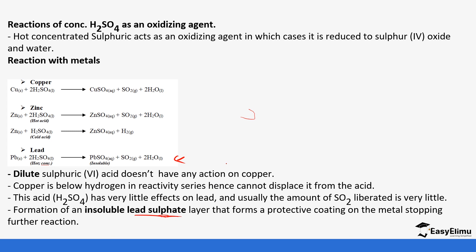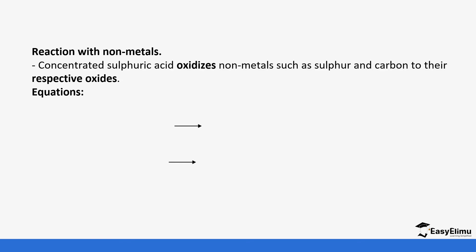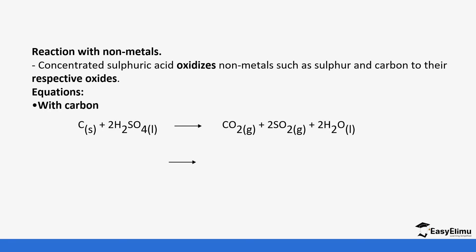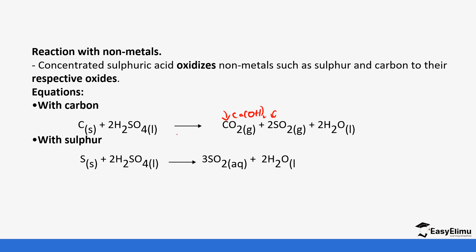Concentrated sulfuric acid also reacts with non-metals, oxidizing them to their corresponding oxides. For example, reacting carbon with concentrated sulfuric acid produces carbon dioxide (CO₂), sulfur dioxide (SO₂), and water. CO₂ can be tested using lime water (calcium hydroxide), and SO₂ can be tested using litmus paper, potassium permanganate, or dichromate solution. Sulfur also reacts with concentrated sulfuric acid to form sulfur dioxide (SO₂) and water.